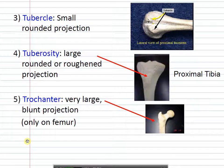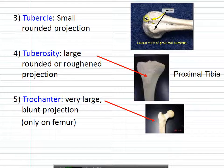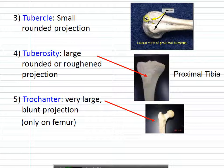Tubercles, tuberosities, and trochanters are named based on size. Tubercles are small bumps. When I pointed out the bicipital sulcus before, here you can actually see the tendon going through it — the little bumps to the side are tubercles. The tuberosity is a little bit bigger. Here's the front of your leg — that first bump you feel past the knee is the tibial tuberosity, a little triangular bump, bigger than a tubercle.